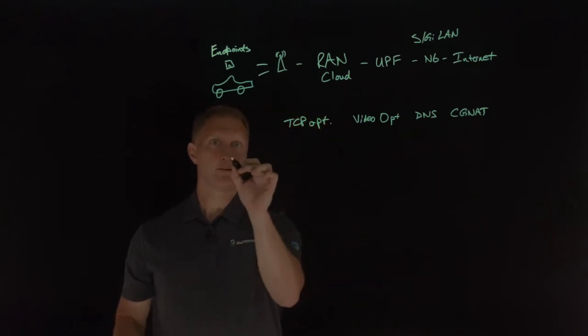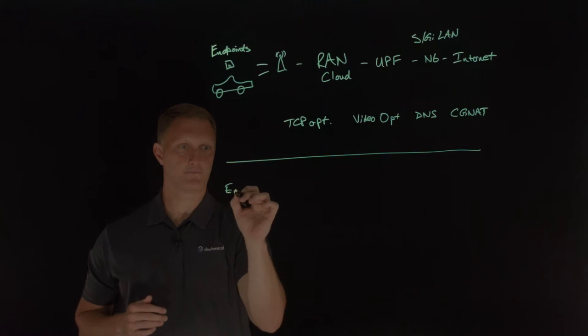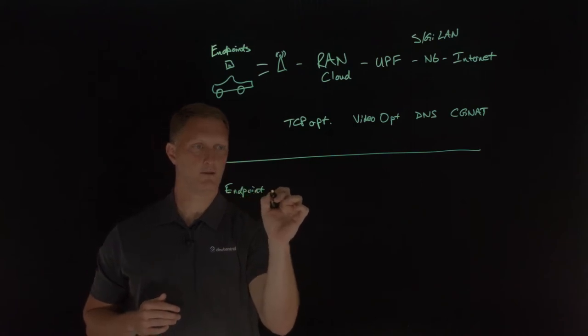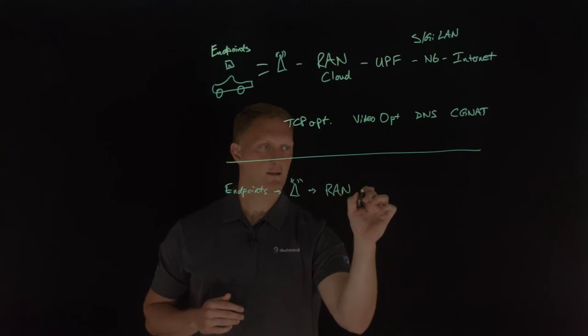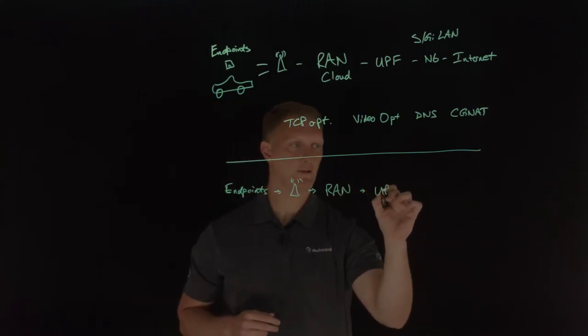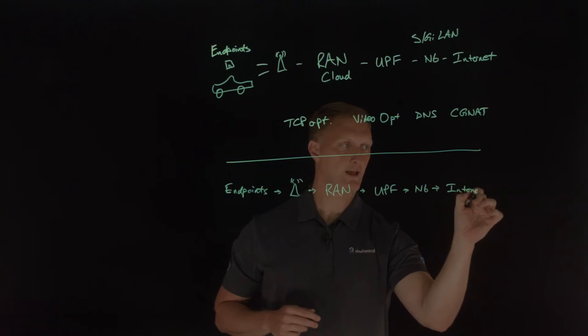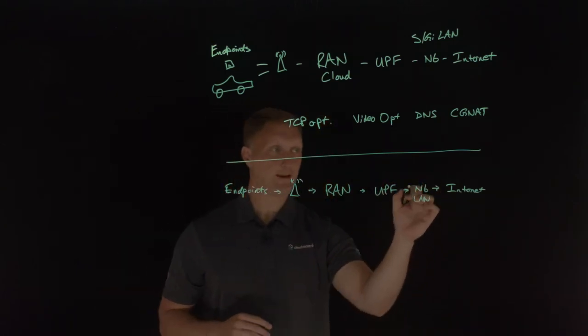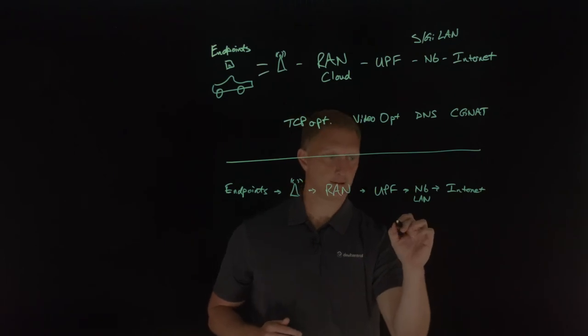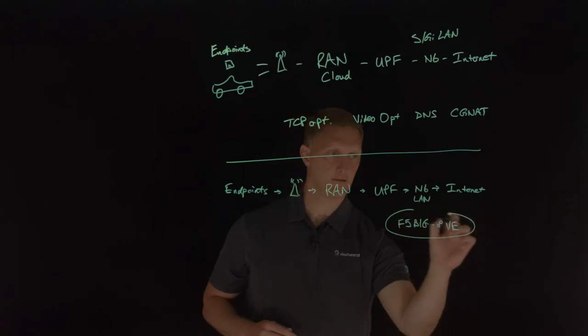All right, so this is where F5 comes in, so I'm going to put a little line right here, and you still have all of this entire architecture here, so I'll put endpoints that go to the tower here, that goes to the RAN cloud, that goes to the UPF, which then is where you find the N6 interface on out to the internet, all right, and so this N6 LAN, I'm going to just do this right here, and we'll kind of blow this up in this portion, so in the N6 LAN, this is where you can deploy F5 technology, so I'll say F5 Big IP VE, so this is the virtual edition of Big IP, so let's put a circle around that.